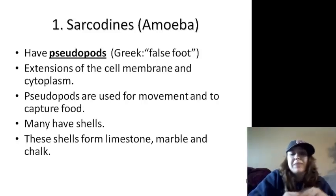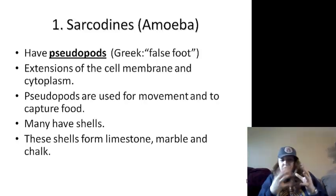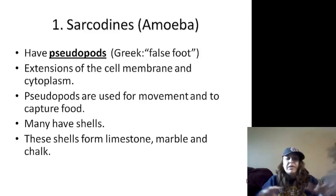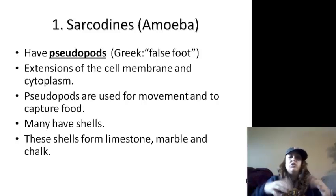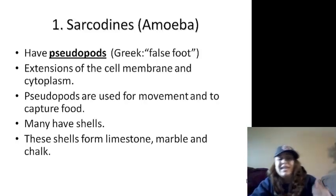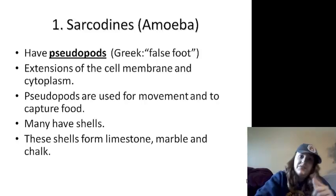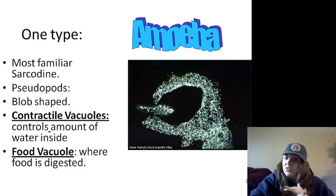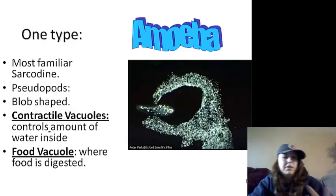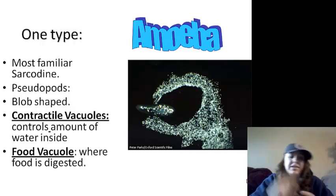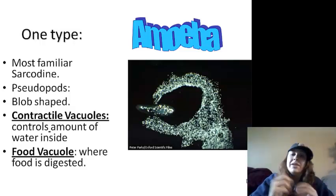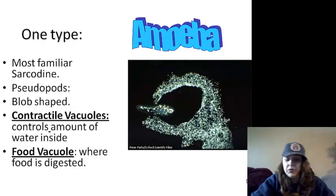The cool thing about sarcodians is many of them have shells. When they die or release their shell, the shells collect on the bottom of the ocean floor. When those get compacted, they actually create limestone, marble, and chalk. Amoebas are the most familiar of the sarcodians — they have pseudopods and blob-like shapes. They have contractile vacuoles for squeezing out water, and food vacuoles where they store their food.